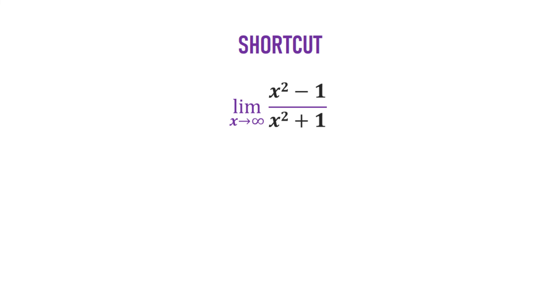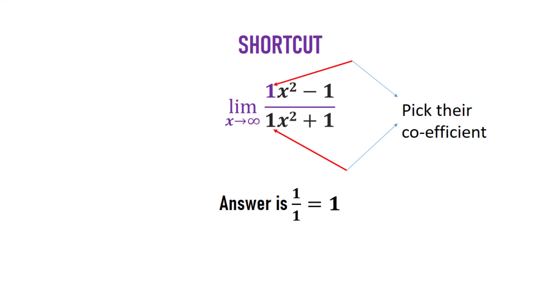Are you serious? Yes, I mean it. Now, this is a shortcut. If you are to limit to infinity, all you need to do is to look at x with the greatest power, both in the numerator and the denominator. Now, if they are the same in the numerator and the denominator, what you just need to do is pick their coefficients as the answer. It's so simple. Just pick their coefficients. The coefficient of x in the numerator is 1, x in the denominator is also 1. Then, you divide 1 by 1, and the answer is 1.